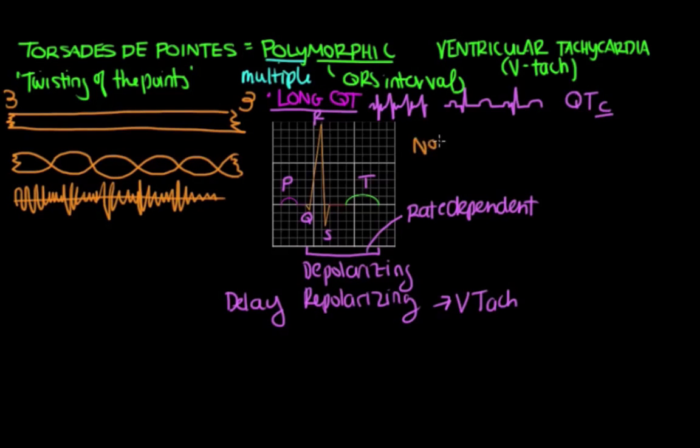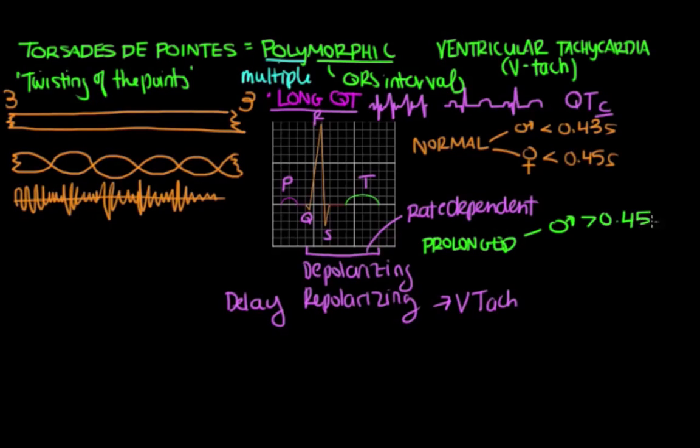Now what's normal for a QT interval? Well, in adults, females typically have a slightly longer QT interval than males. So in a normal adult male, the QT should be less than 0.43 seconds. And in a normal adult female, it should be less than 0.45 seconds. A QT interval is considered to be prolonged in an adult male if it's greater than 0.45 seconds, and prolonged in a female if it's greater than 0.47 seconds.